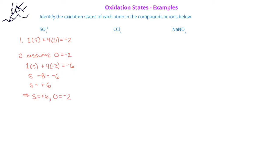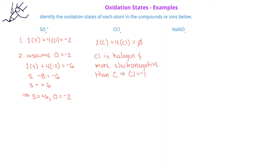In the second example, we have the neutral molecule CCl4, carbon tetrachloride. The sum of the oxidation states of the one carbon and the four chlorines must equal zero. Since chlorine is a halogen and more electronegative than carbon, we assume chlorine has an oxidation state of minus one. Therefore, one carbon plus four times negative one must equal zero, and rearranging, the oxidation state of carbon must be plus four.